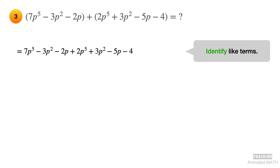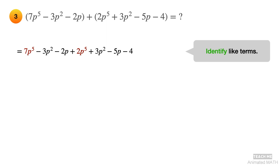Identify like terms. Terms with p raised to 5 are colored red. Terms with p squared are colored yellow. And terms with p are colored green.